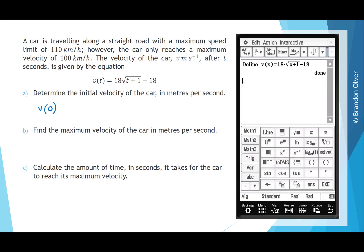So now that's done. For part A, we want to evaluate v(0), so we can drag that down and replace x with 0. We find v(0) is 0. So from the CAS calculator, we found that the initial velocity is 0 metres per second, written as m s⁻¹.